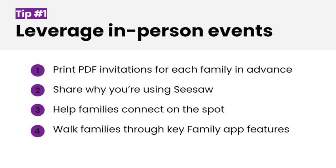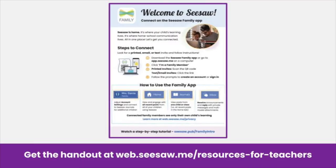Help them download the Family App or access app.seesaw.me, scan their child's QR code, and create an account. It also helps to walk families through key Family App features like how to see their child's posts and communicate with you. We created a handout you can share with families at in-person events or as a follow-up via email. Get the link in the video description.